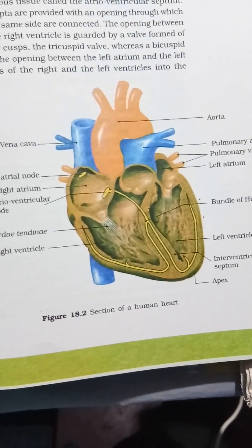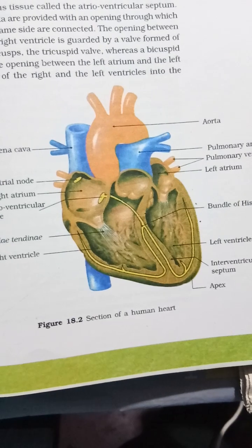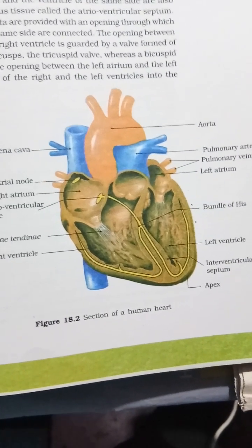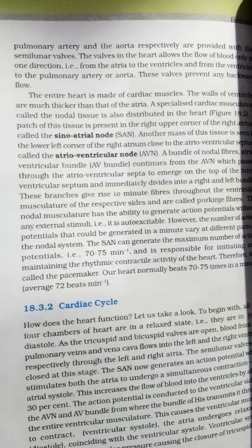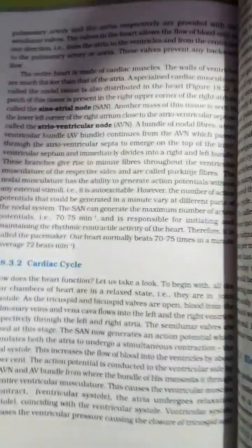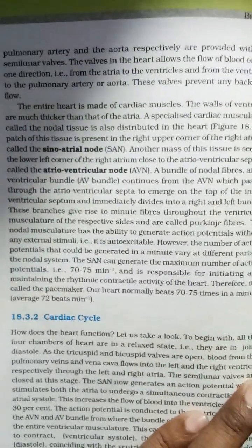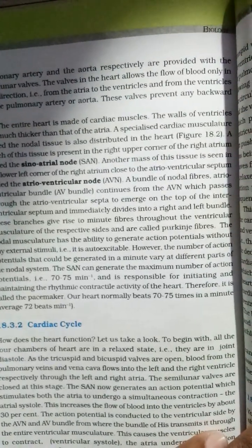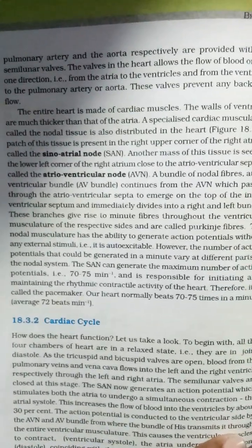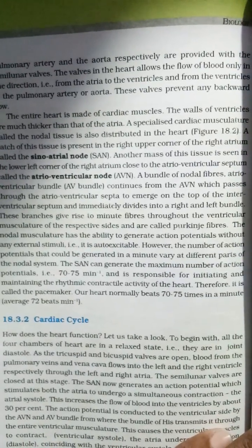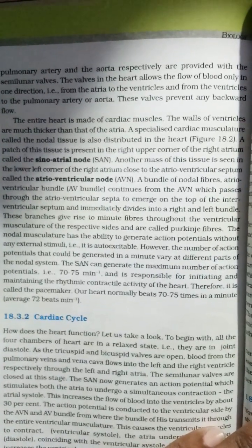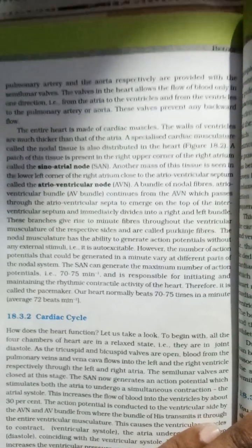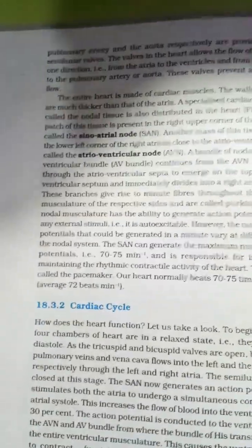The openings of the right and left ventricles into the pulmonary artery and aorta respectively are provided with semilunar valves. The valves in the heart allow the flow of blood only in one direction — from the atria to the ventricles, and from the ventricles to the pulmonary artery or aorta. These valves prevent any backward flow.